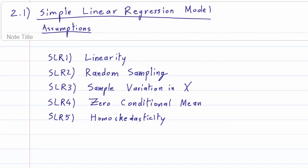So the five assumptions are linearity, random sampling, sample variation in X, the zero conditional mean, and homoskedasticity. It might not mean a lot of things to you right now, so we are going to go behind each of the assumptions to see what they mean.